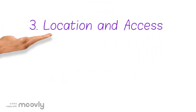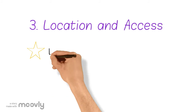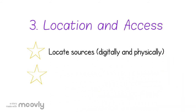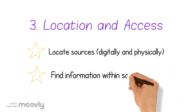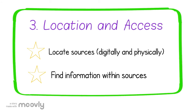Step 3: Location and Access. Locate sources digitally and physically, and find information within those sources. Ask yourself: Where can I find what I need? Where is each source? Where is the information in each source? Locate sources and find information within the text. Consult the library catalog, library reference section, and search engines. You can use a graphic organizer to map out your topic and sub-topics.